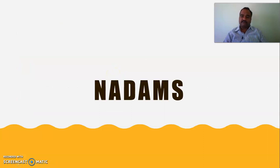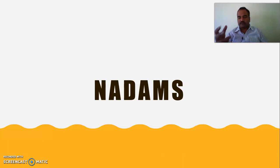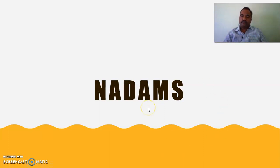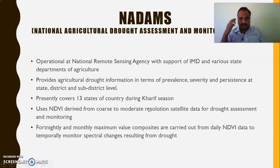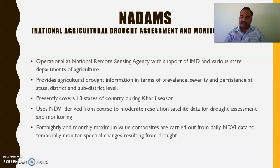You will be asked to list the different assessment indicators and write brief information on each. You may also be asked to write in detail about NDVI for two marks. Now, moving on to NADAMS, which we studied briefly in lecture one — NADAMS is our country's system which monitors and assesses the agricultural drought. NADAMS stands for National Agricultural Drought Assessment and Monitoring System.